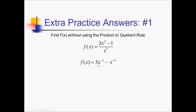Going through and using the power rule now, this first one is going to be negative 3x to the negative 2. And then for this next one, this will be positive 3x to the negative 4.